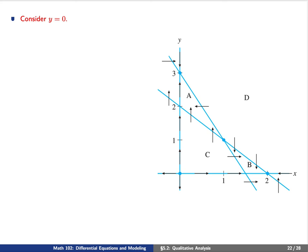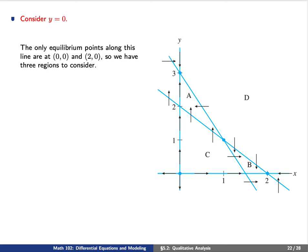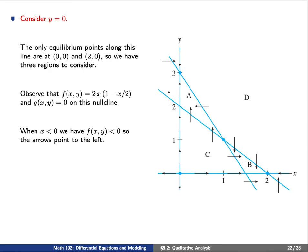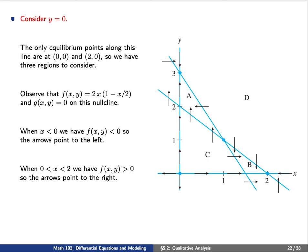Those were the x-nullclines with up-down arrows. Now let's consider the y-nullclines. The first is y equals 0, with equilibrium points at the origin and (2,0). On the y-nullcline, g equals 0, so we use a simple formula for f(x,y). When x is to the left of the origin, f is negative so arrows point to the left. When x is between (0,0) and (2,0), f is positive so arrows point to the right. When x is to the right of (2,0), f is negative so arrows point to the left.